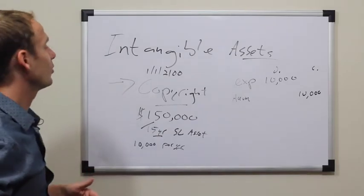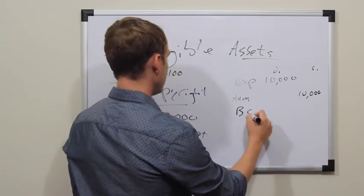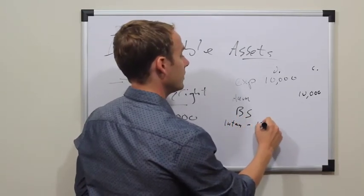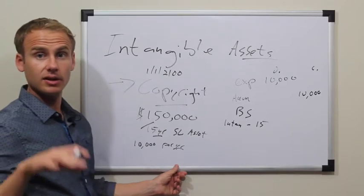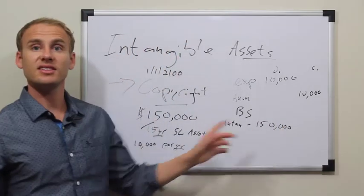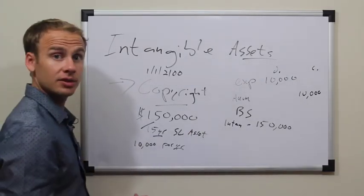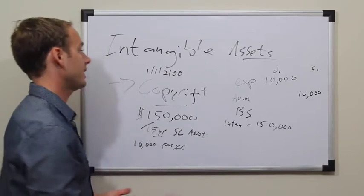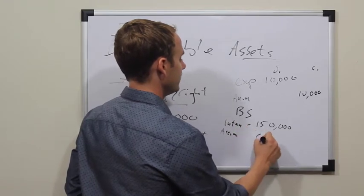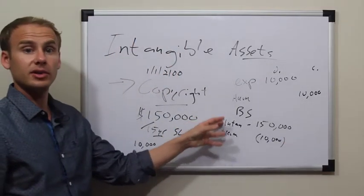For everyone from a financial statement perspective, how this is going to look on the balance sheet is you'll state the copyright — the intangible asset — at cost, especially under generally accepted accounting principles in the United States. So that $150,000 is a bookmark showing what it was purchased at. And then each year you'll have accumulated amortization, which will be minus $10,000 after year one.